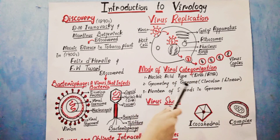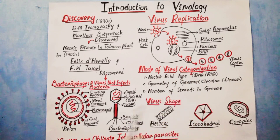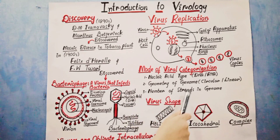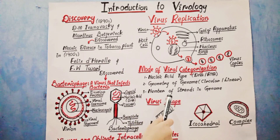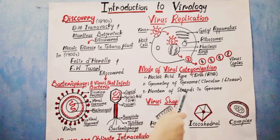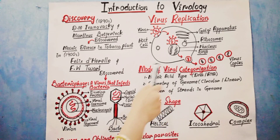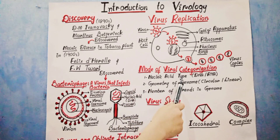We can also categorize viruses on the basis of the number of strands in the genome. The genome may be present as a single strand or as double strands. This completes the modes of viral categorization.